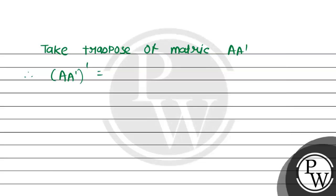For that, we consider one rule: (AB)' = B'A'. So the same rule can be applied here. That will give us (A')' · A'.